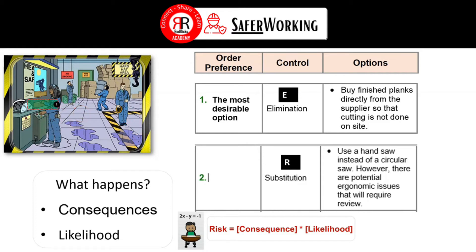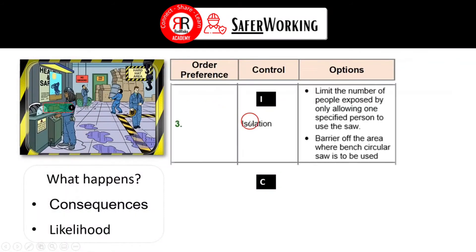The next option is substitution or replacement — you could use a hand saw instead of a circular saw, but there are potential ergonomic issues that require further review. It's important to emphasize that substitution may reduce consequences but could also create other issues, so we need to look at each one separately.